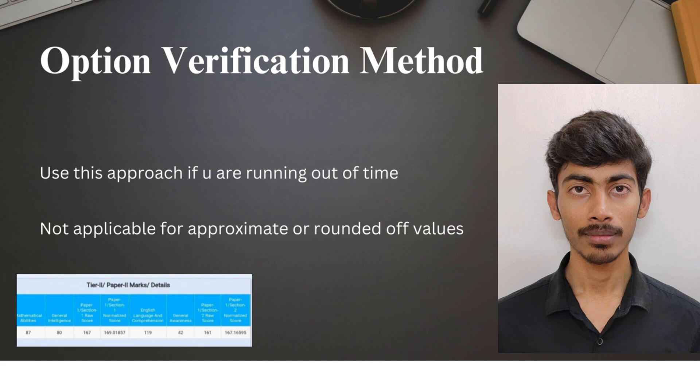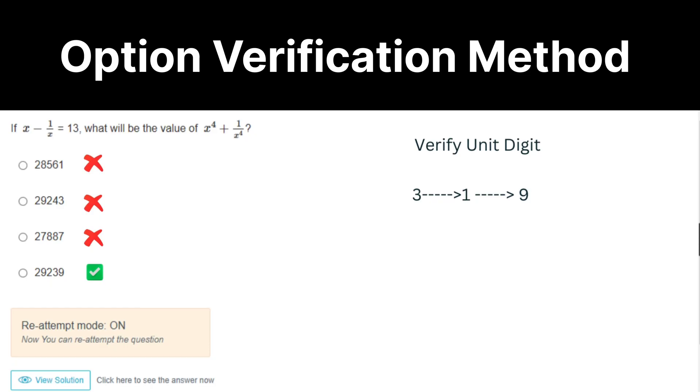See the first question: x power 4 plus 1 by x power 4, which means you can just use unit digits. For instance, k square plus 2, which means 3 square plus 2, unit digit will be 1. From there, k square minus 2, which means 1 square minus 2, unit digit will be 9. That's it.